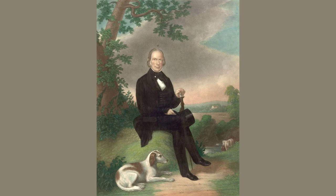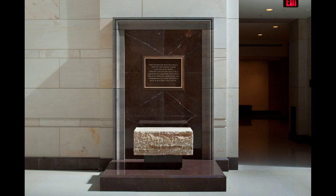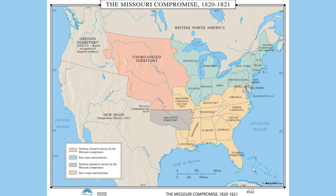The Missouri Compromise. In 1820, the Missouri Compromise was enacted to maintain a balance between free and slave states. The Compromise admitted Missouri as a slave state and Maine as a free state, while also establishing a line dividing future territories into slave and free regions.